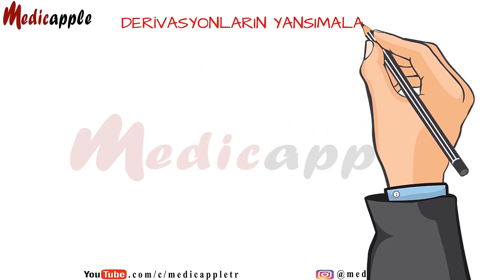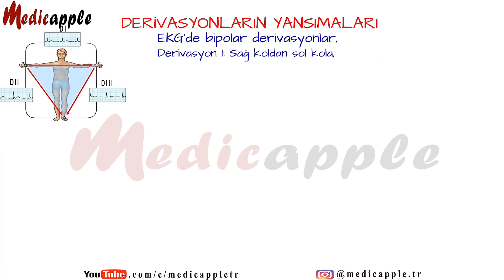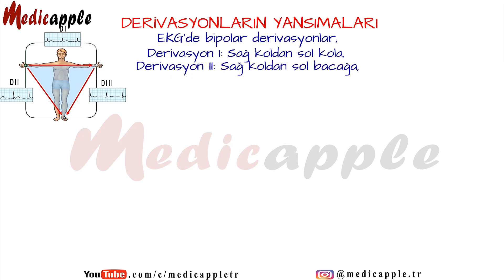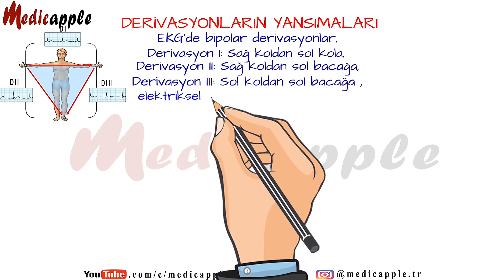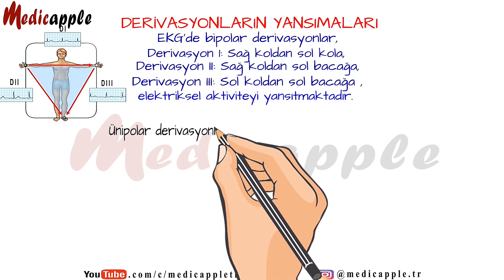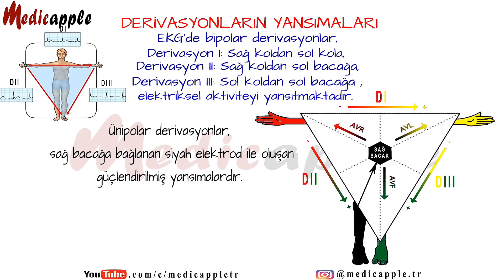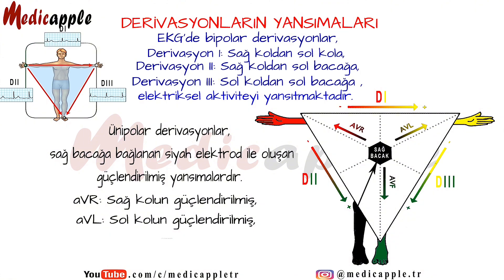Reflections of the derivations. Bipolar leads in the ECG reflect electrical activity as follows — Lead 1: from the right arm to the left arm; Lead 2: from the right arm to the left leg; Lead 3: from the left arm to the left leg. Unipolar leads are amplified reflections created by the black electrode connected to the right leg. AVR reflects the amplified electrical activity of the right arm. AVL reflects the amplified electrical activity of the left arm. AVF reflects the enhanced electrical activity of the left leg.